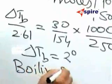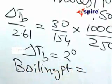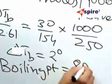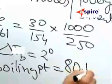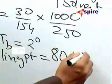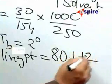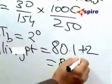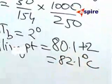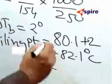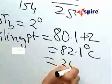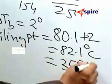Now the boiling point of the resulting solution will be equal to 80.1 plus 2 that is equal to 82.1 degrees centigrade. This in turn will be equal to 355.1 Kelvin.